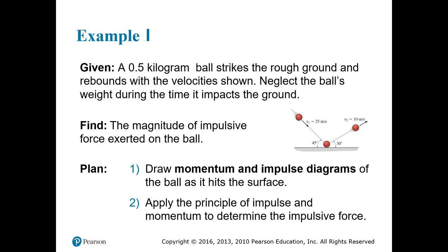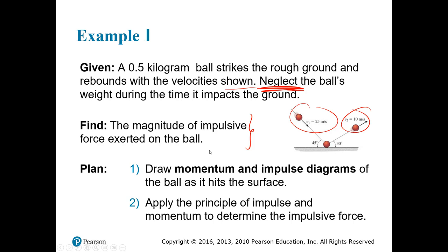Let's solve our first exercise. A 0.5 kilogram bolt strikes a rough ground and rebounds with the velocities shown. We need to neglect the ball's weight during the time it impacts the ground and find the magnitude of the impulse force exerted by the ball. The first step is to establish my x-y coordinate system — in this case we only have x and y. If you establish the wrong coordinate system and get a negative value, it shouldn't impact calculations as long as you track that coordinate system.